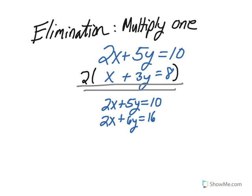So now, we're going to solve this by elimination like we did in the previous sections. In this case, since we have 2x and 2x, we're going to subtract the two equations.